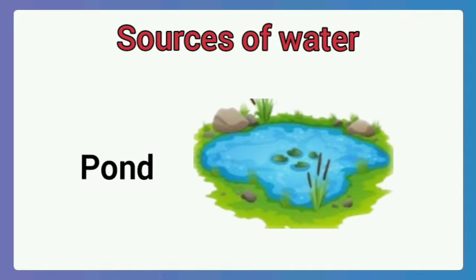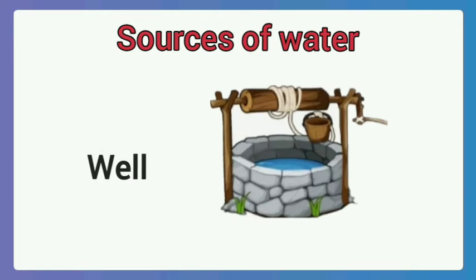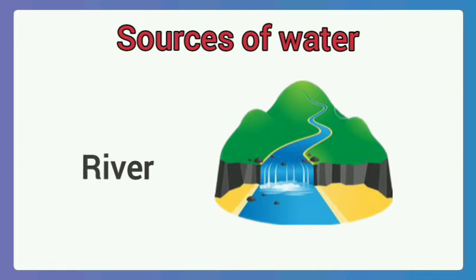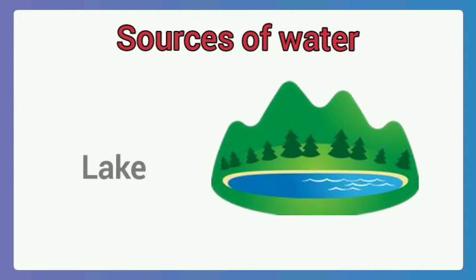Pond — spelled P-O-N-D. Well — spelled W-E-L-L. River — spelled R-I-V-E-R. Lake — spelled L-A-K-E.